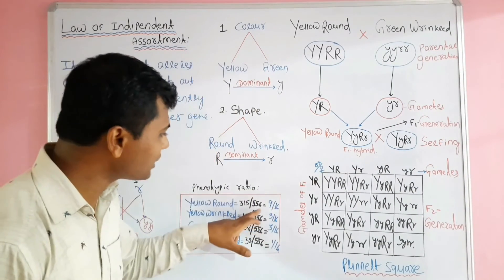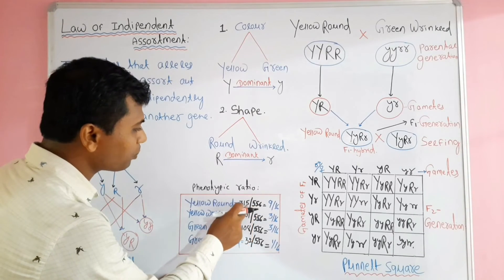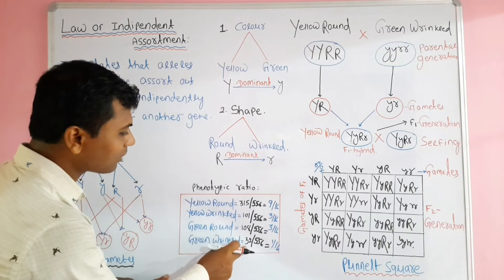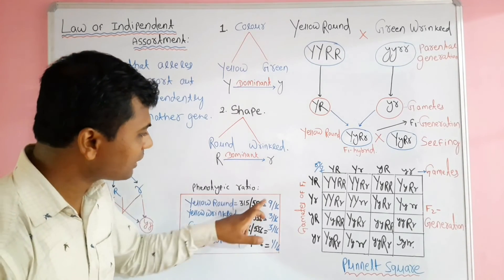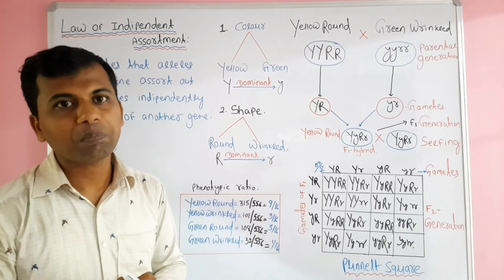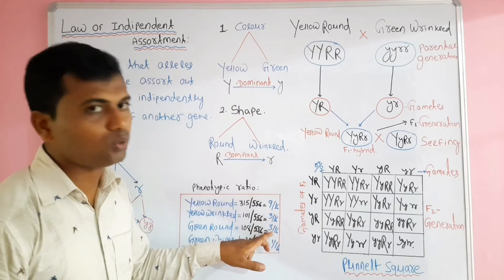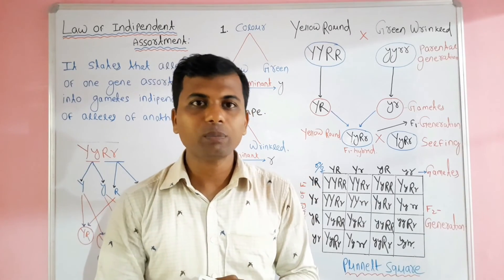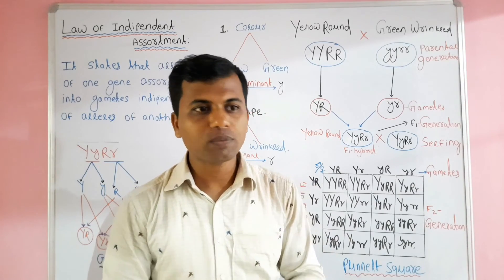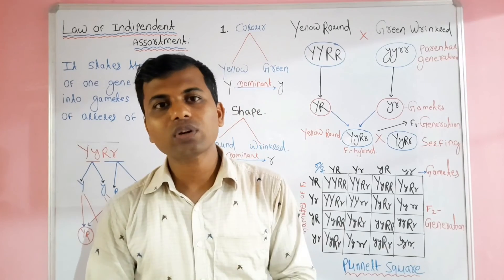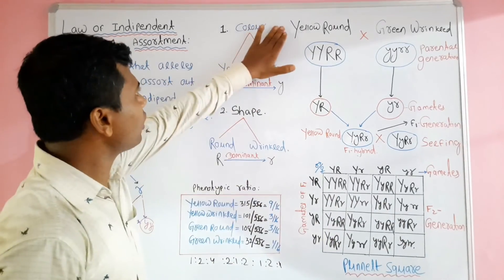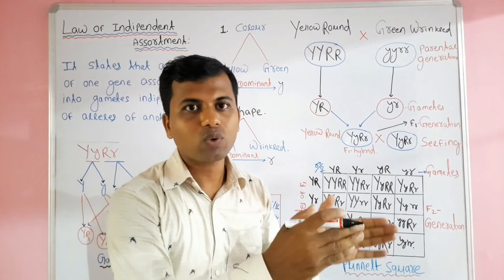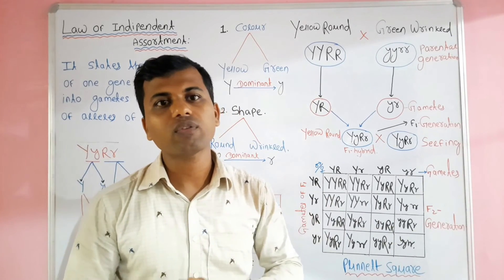Mendel obtained 556 plants in the F2 generation. Out of 556 plants, 315 plants showed phenotype yellow round, 101 plants showed phenotype yellow wrinkled, 108 plants showed phenotype green round, and 32 plants showed phenotype green and wrinkled. The ratio is 9:3:3:1. This phenotypic ratio of the F2 generation shows that the factors for each of the two characters assort out independently of each other — the alleles of one gene do not depend upon the alleles of another gene to transfer from one generation to the next. Alleles for color, capital Y and small y, and alleles for shape, capital R and small r, do not depend upon each other to transfer from one generation to the next. This is the basis of the law of independent assortment.